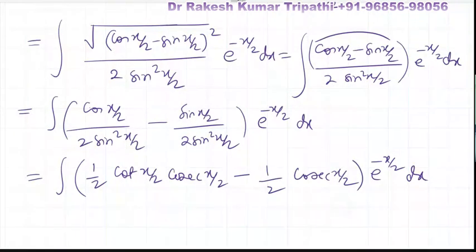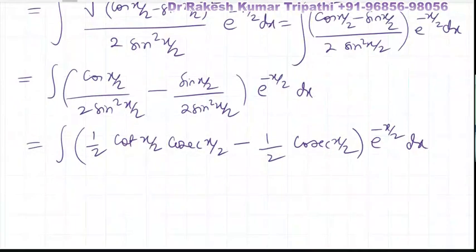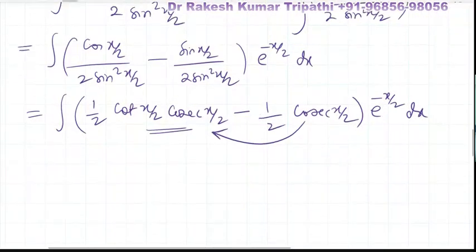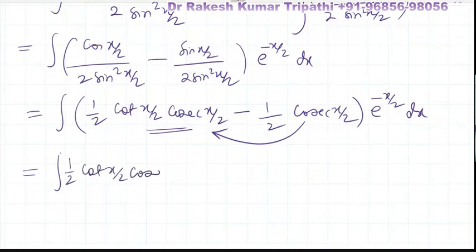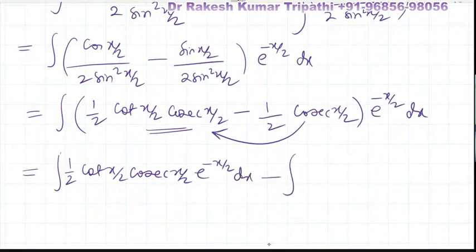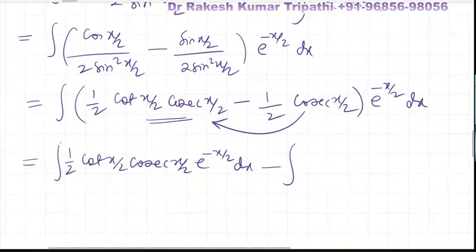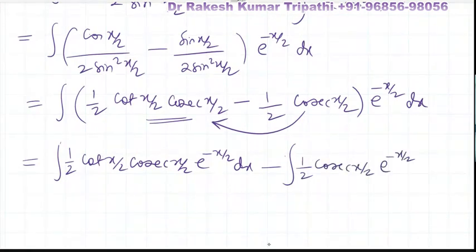We notice that this expression indicates the derivative of cot(x/2) appears. So we separate the integral into two parts: the first part (1/2)·cot(x/2)·cosec(x/2)·e^(-x/2) dx, and the second part (1/2)·cosec(x/2)·e^(-x/2) dx. For the second integral, we will use integration by parts.